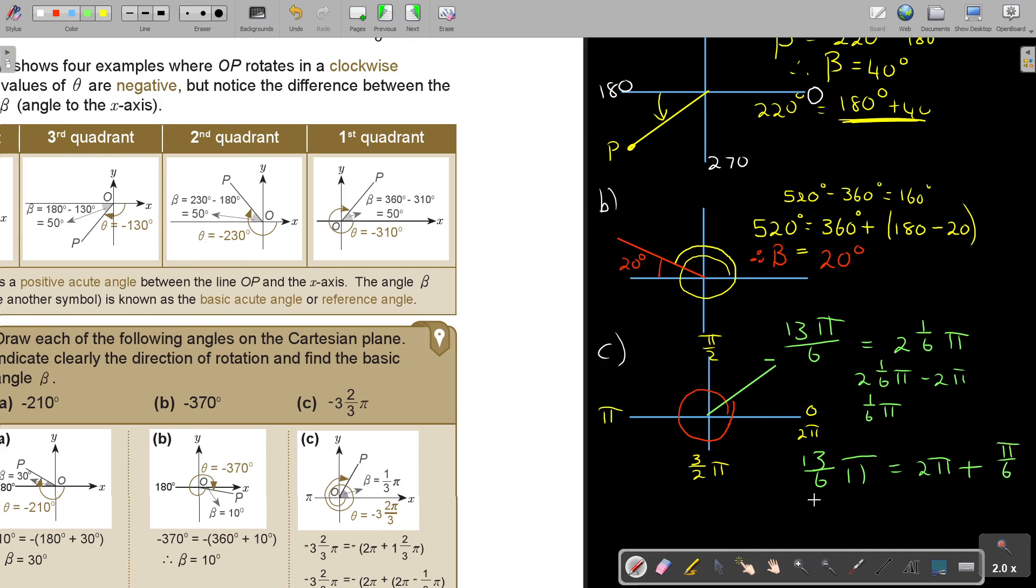Therefore, beta is equal to pi over 6. Get used to this, because this is a preparation of what we're going to do later.